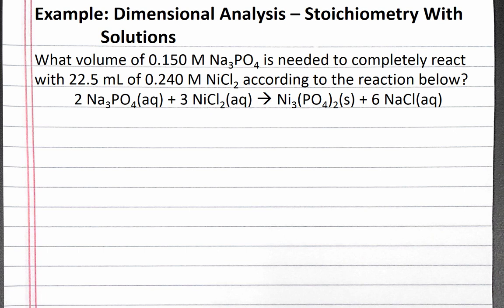In this example, we use dimensional analysis to solve a problem involving stoichiometry with solutions. Our problem reads: what volume of 0.15 molar sodium phosphate is needed to completely react with 22.5 milliliters of 0.24 molar nickel chloride according to the reaction below?